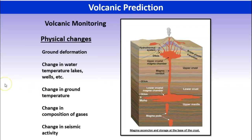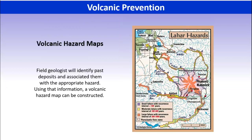Other things we might look for that would indicate a volcanic eruption might happen include the ground deforming. As magma moves close to the surface, we might get bulges in the land surface — we certainly saw that in Mount St. Helens. Water temperature changes as magma gets closer to the surface and heats up groundwater. The ground itself changes in temperature. Compositions of the gases change. Lots of earthquakes — all these things are ones we would monitor and might indicate that some type of eruption is going to happen.